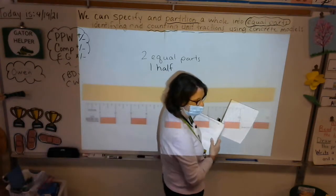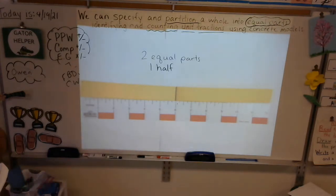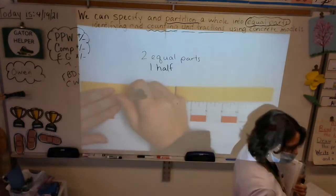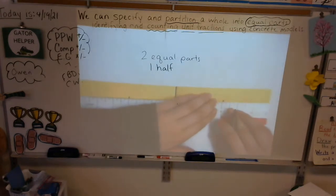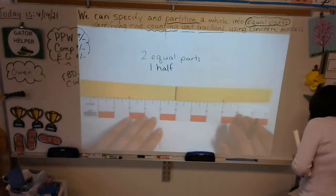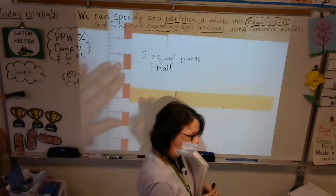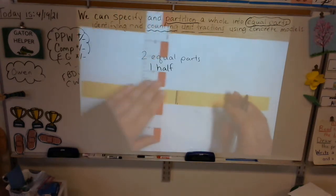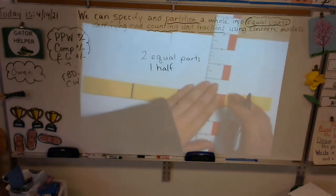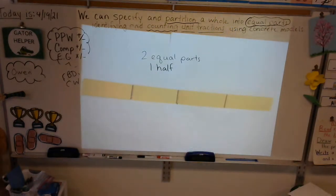Now take that same strip, put your ruler against it again, and make additional marks at three inches and nine inches. Once you've made the marks at three inches and nine inches, go ahead and use your ruler to make those lines. Nice job — the ruler helps it be nice and neat.